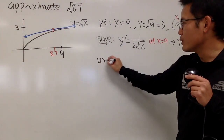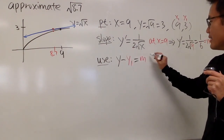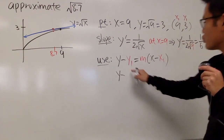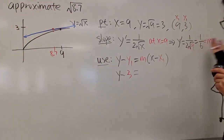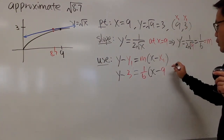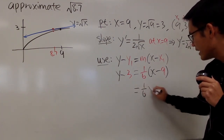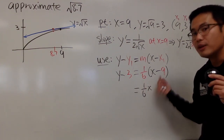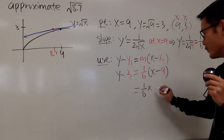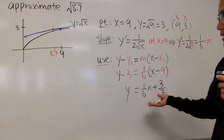Then we can use the point-slope form: y minus y₁ equals m times (x minus x₁). Plugging everything in: y minus 3 equals (1/6) times (x minus 9). Working this out: that gives (1/6)x, and this times 9 is negative 3/2. Then adding 3 to both sides — negative 3/2 plus 6/2 — and that's pretty much the equation of the tangent line.